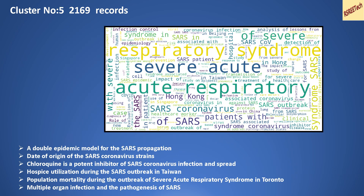Cluster number 5 has close to 2,000 records. The word cloud highlights 'severe acute respiratory syndrome' or SARS. Looking back at the titles, papers mostly discuss SARS coronavirus strains, SARS propagation, chloroquine, and population mortality during the SARS outbreak. If you need to read anything related to SARS, this is a good cluster.